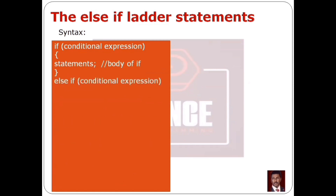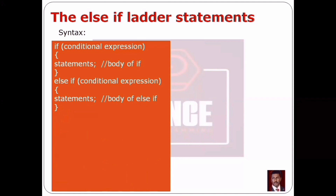In the else-if ladder, instead of a plain else, we associate an else-if statement. The else-if again has a conditional expression in parentheses — the next condition to evaluate. When that block opens with a curly brace, there is a statement block, which is the body of the else-if. After closing that block, we test the next condition using another else-if statement.